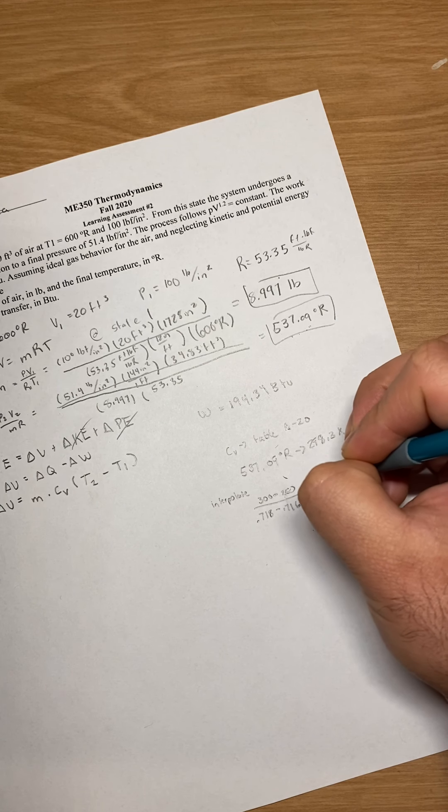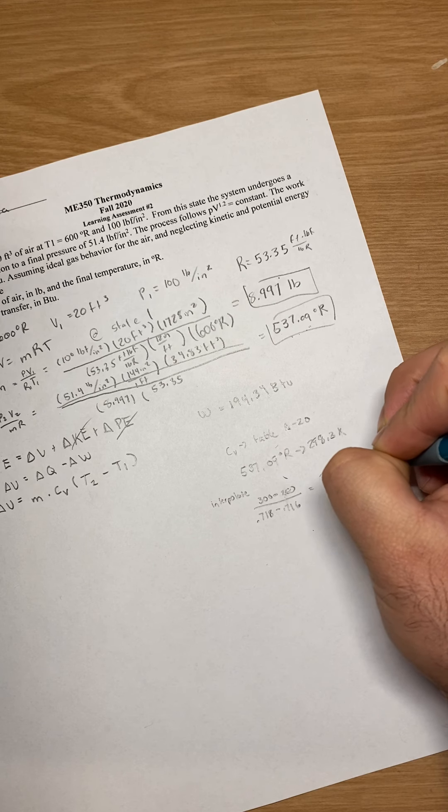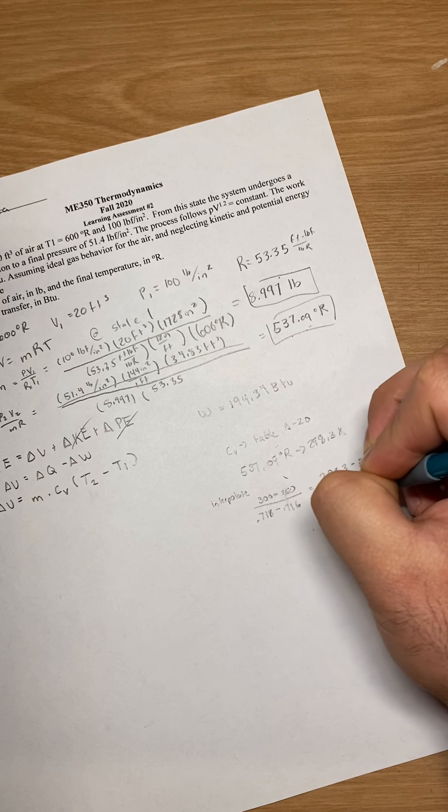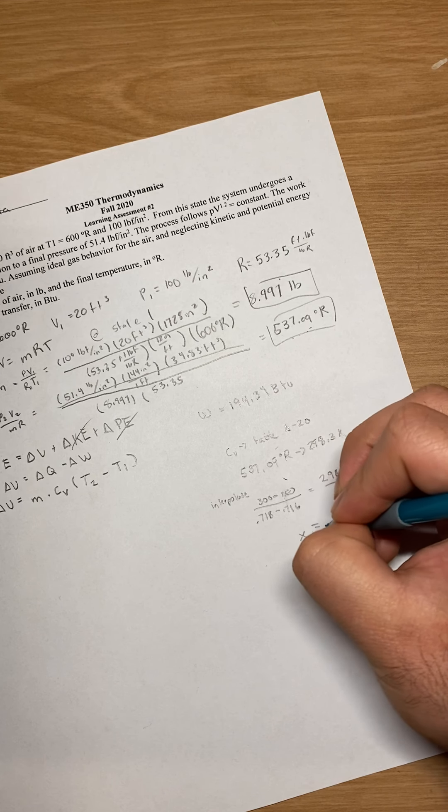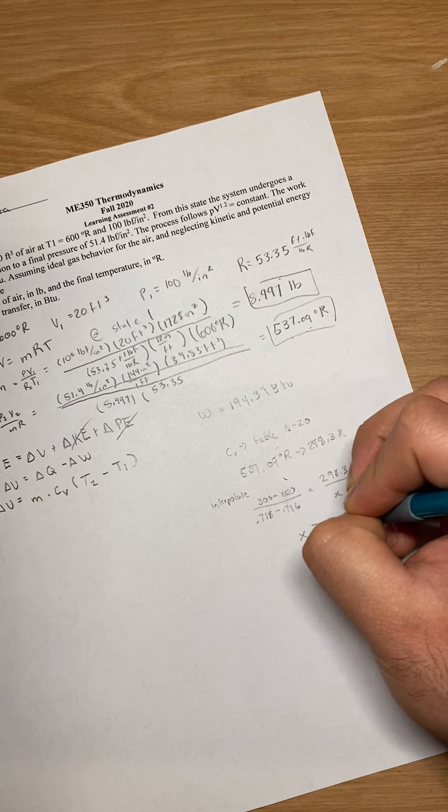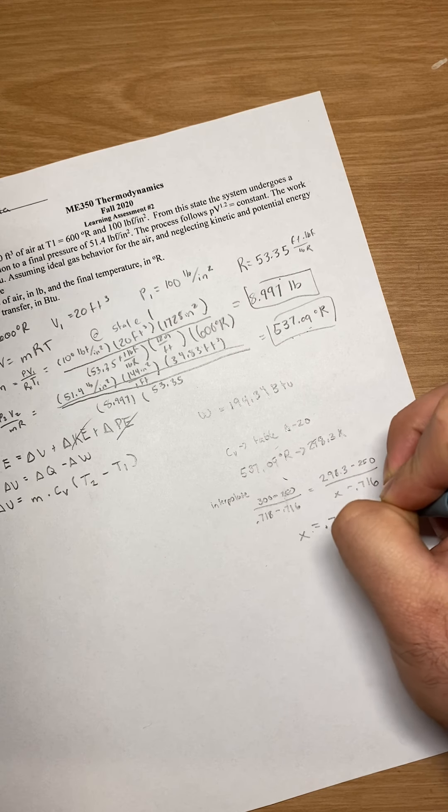So this is the Cv at each temperature equals, and then or what we want, what we're going to solve, minus 250 over X minus 0.716. So our X turns out to be 717 kilojoules per kilogram times Kelvin.